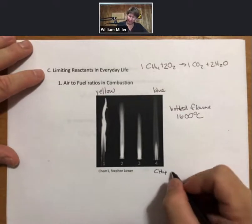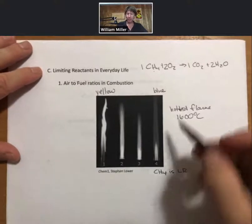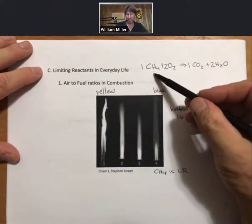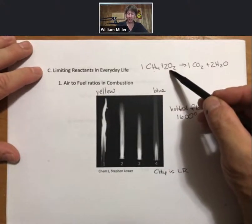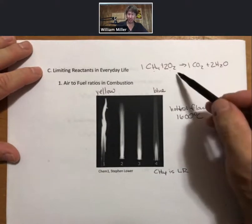Methane is the limiting reactant. And when methane is the limiting reactant, that means that there will be excess oxygen, carbon dioxide, and H2O as the products, but excess oxygen.